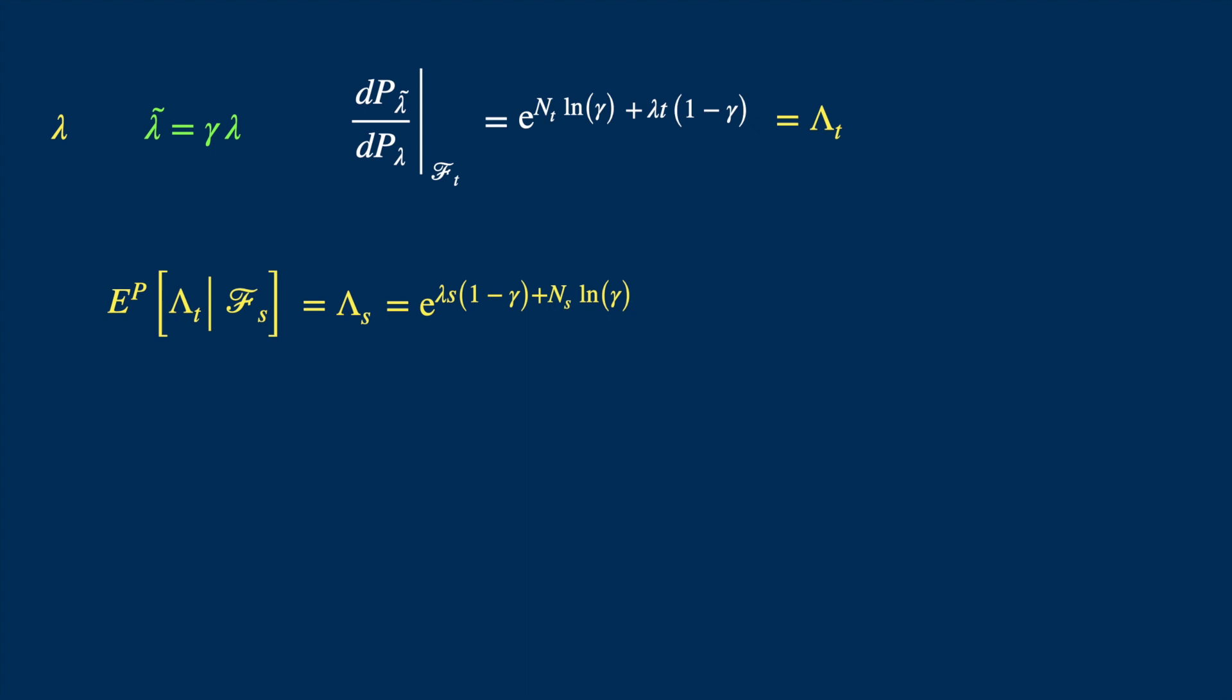The third thing we need to show is that its expected value, given the trivial sigma algebra, which is the filtration at time zero, is equal to one, which you can show by repeating the same steps. But we can deduce it from the expression we have for lambda underscore s, for if you substitute zero for s, then you can see that the exponent will be zero, because the Poisson process starts at zero. So n underscore s will also equal zero, and then the exponential of zero equals one. So we conclude that this is a valid density, and we thus have the Radon-Nikodym derivative.